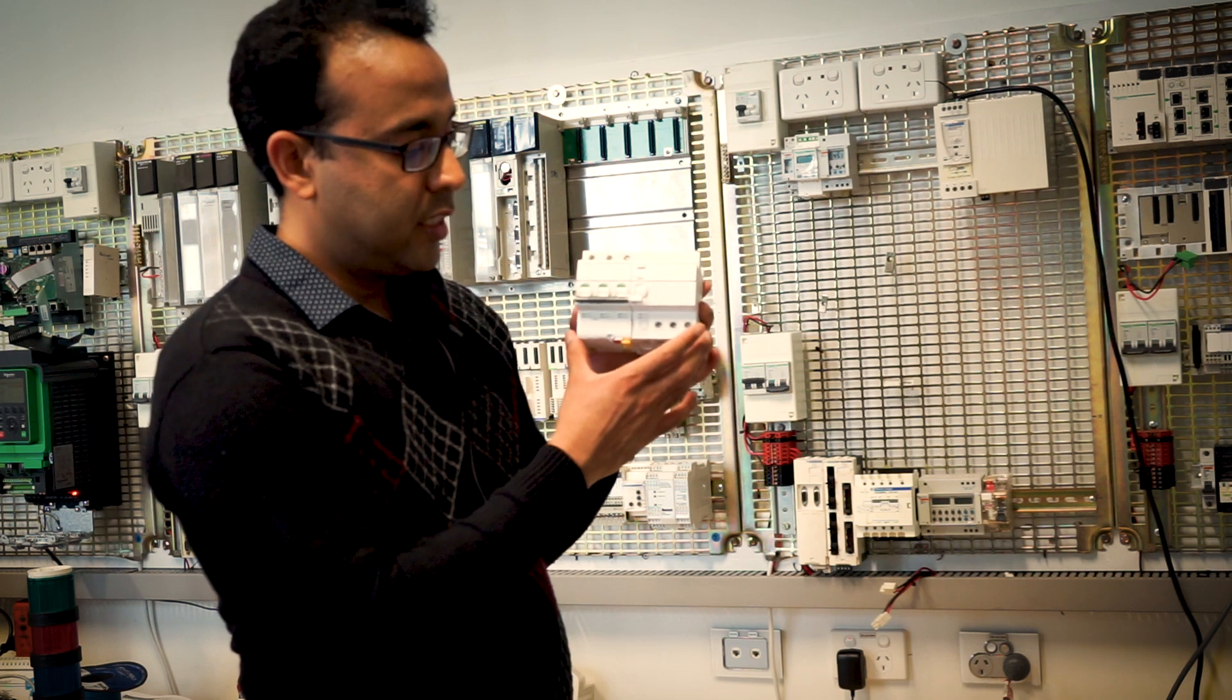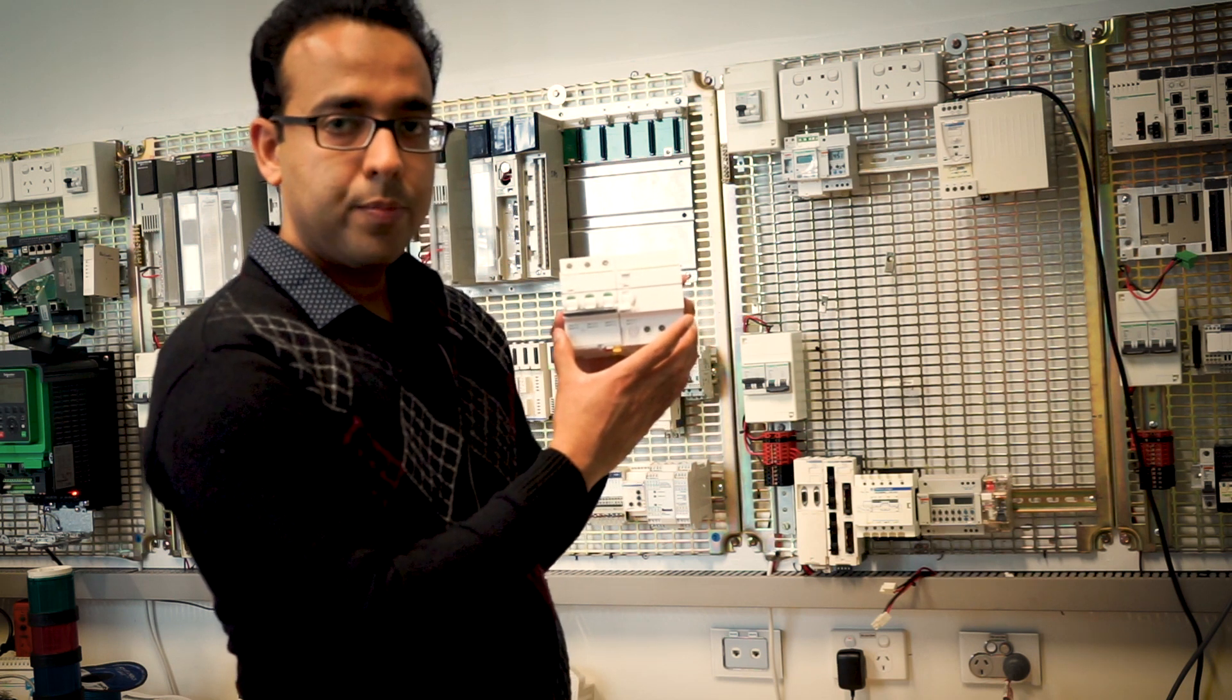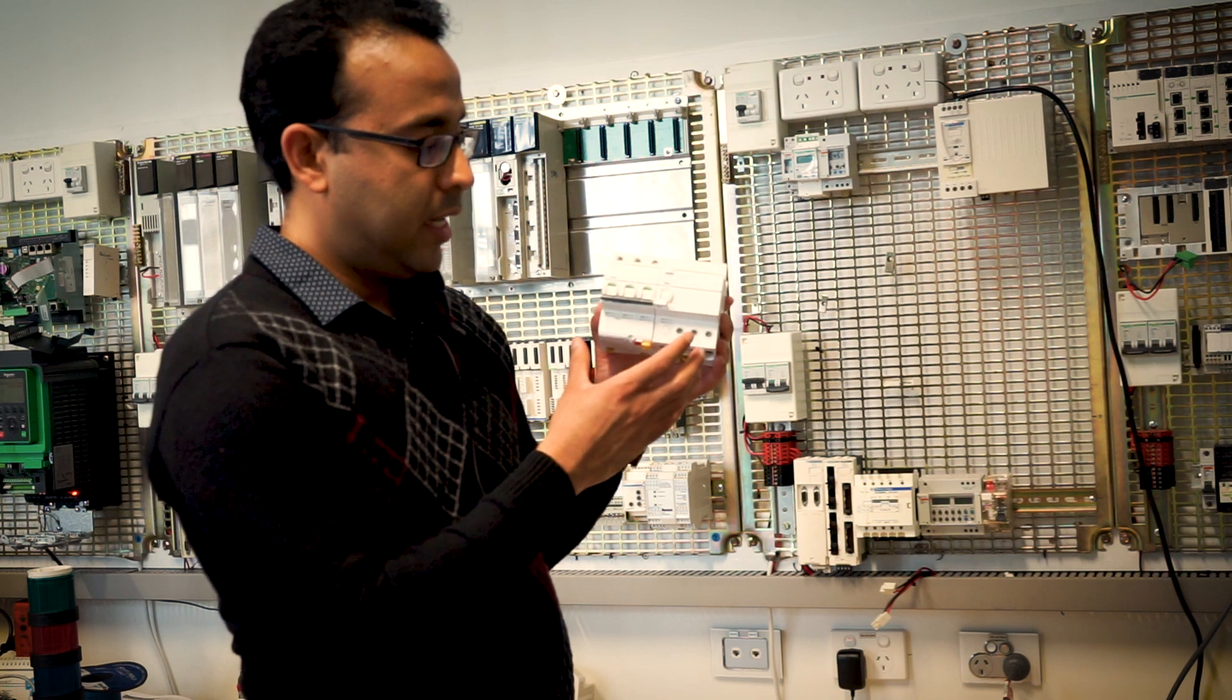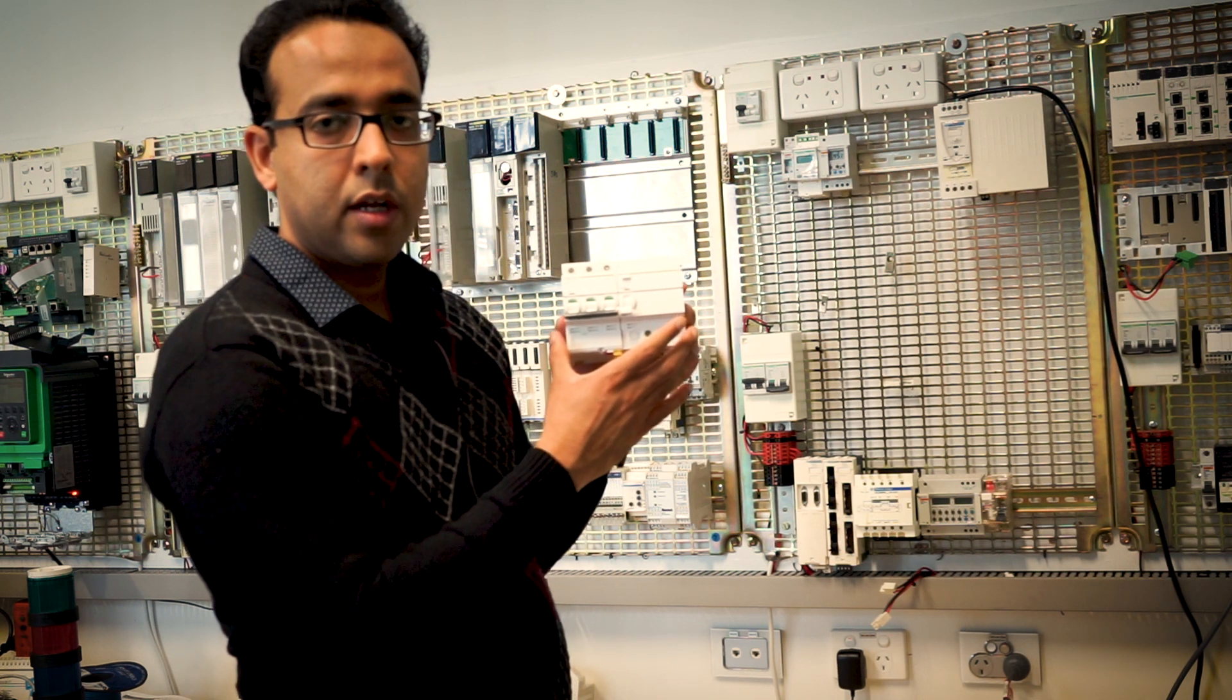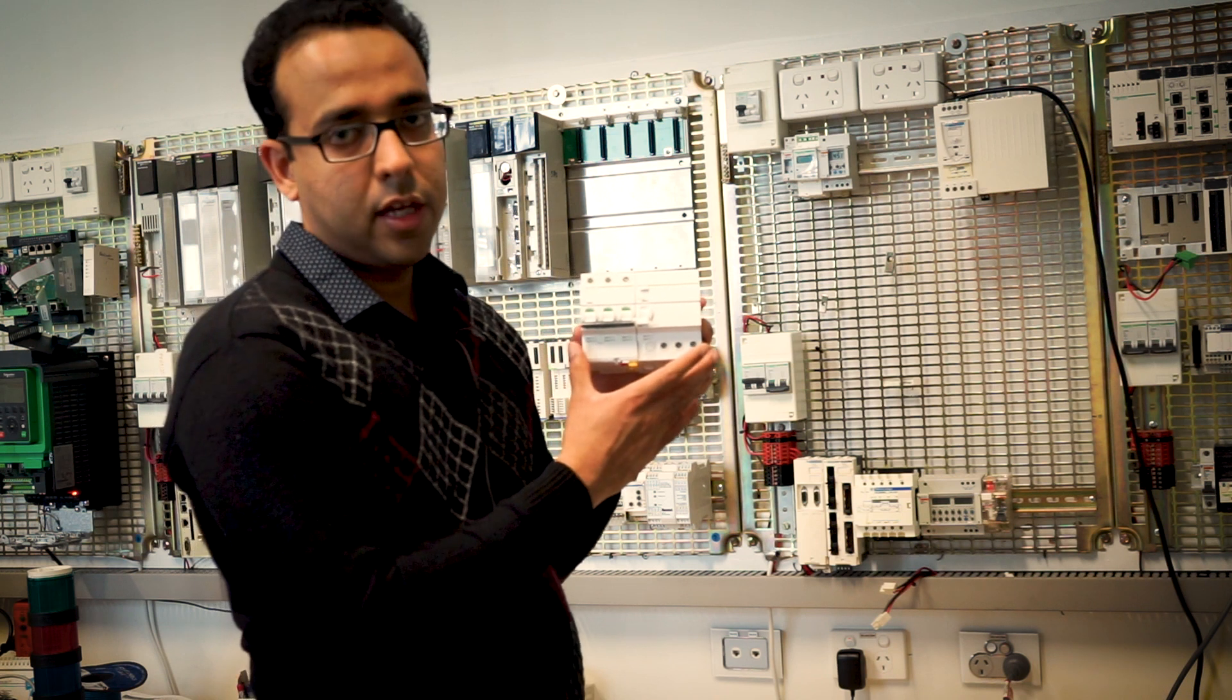You can see this is 6-poles wide and it is giving you a combination of overload protection, short circuit protection, and earth leakage protection.